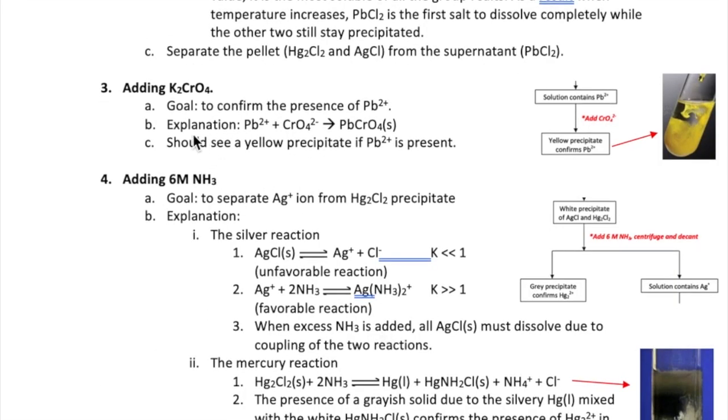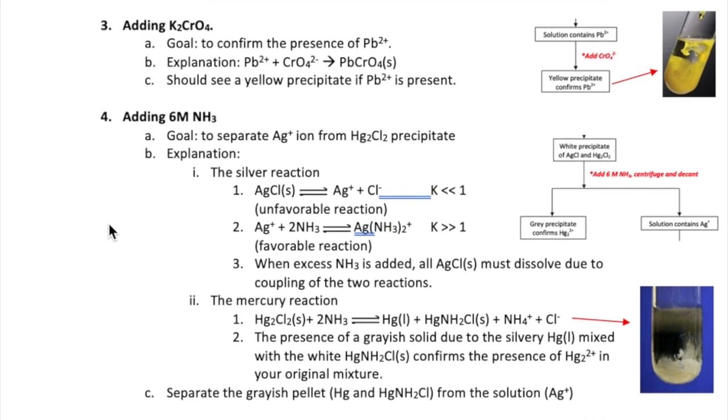The next step is to confirm that the lead ion is actually present. To do this, we add chromate ions, which form a yellow precipitate of lead chromate when lead is present. Alright, let's move on to the next step, which is to separate the remaining two ions, silver and mercury one. Here, we will add ammonia, or NH3.